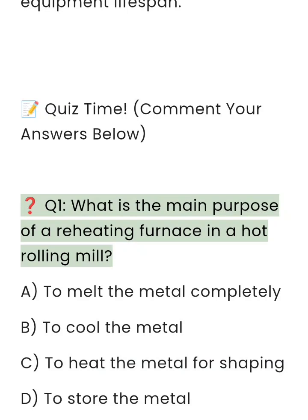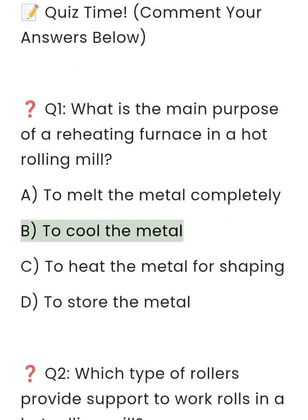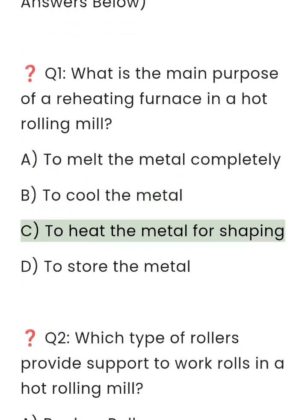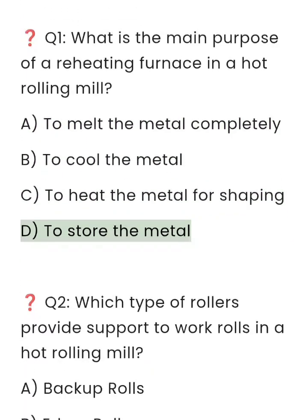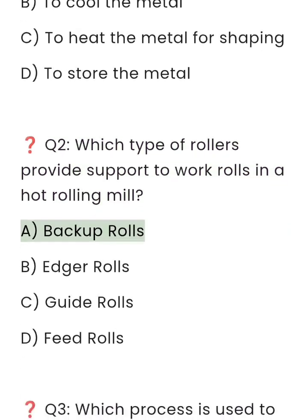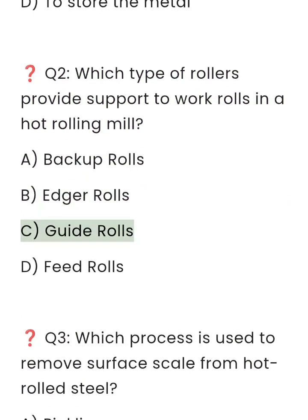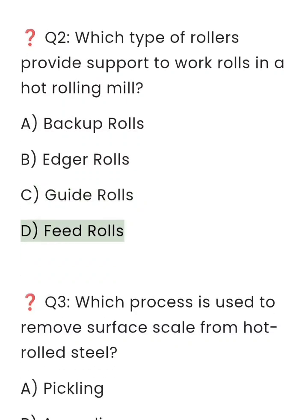Quiz time. Q1: What is the main purpose of a reheating furnace in a hot rolling mill? A: To melt the metal completely. B: To cool the metal. C: To heat the metal for shaping. D: To store the metal. Q2: Which type of rollers provide support to work rolls in a hot rolling mill? A: Backup rolls. B: Edger rolls. C: Guide rolls. D: Feed rolls.